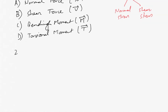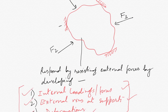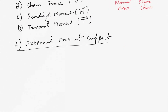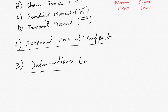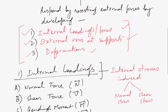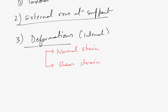Second is external reactions at supports. Reactions will be developed at the supports after application of these external forces. Third is deformations — internal deformations also occur due to application of external forces. Deformations are: first, normal strain; and second, shear strain. We will also study these two strains — normal strain and shear strain — in detail.